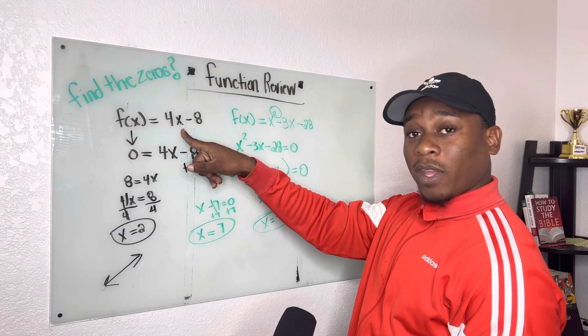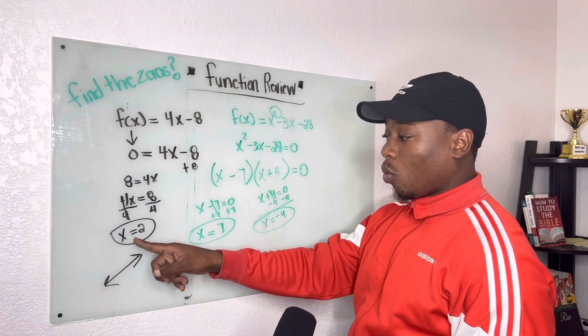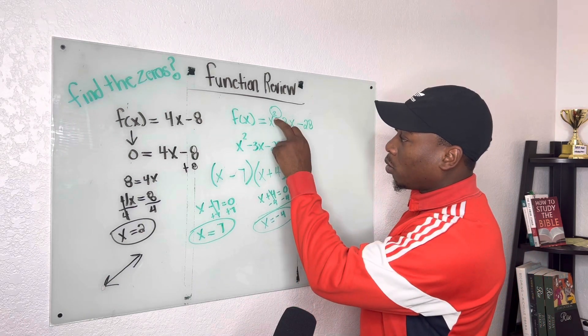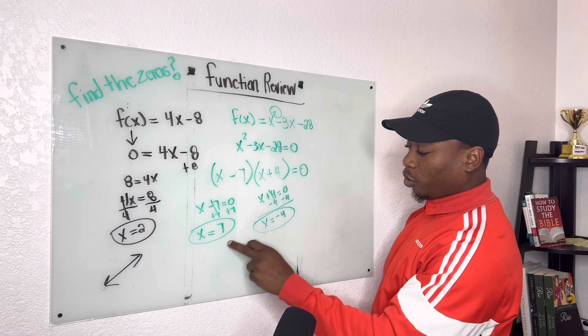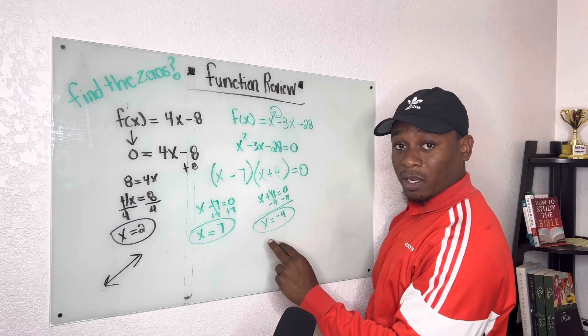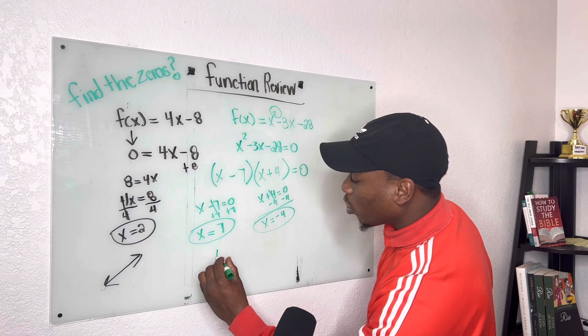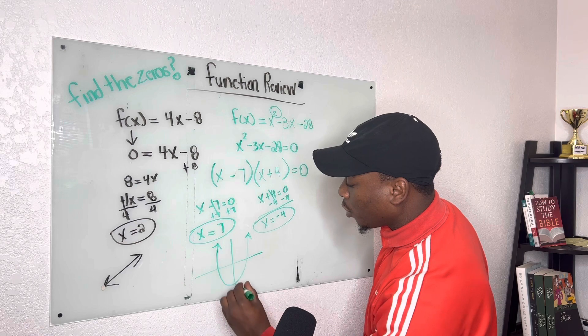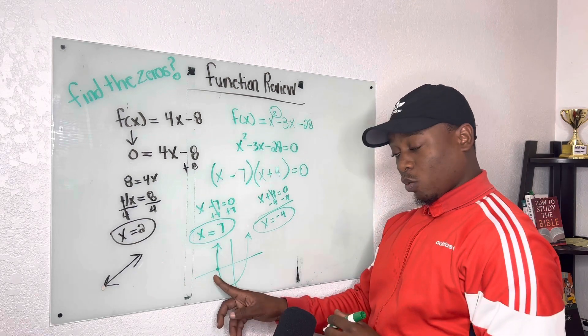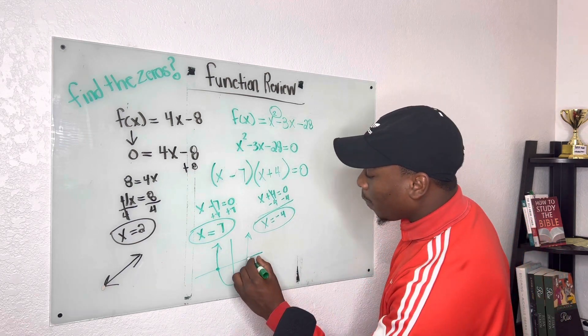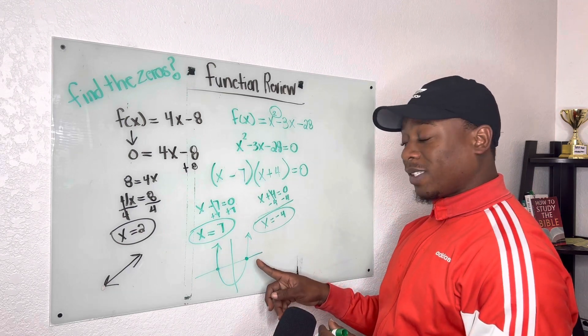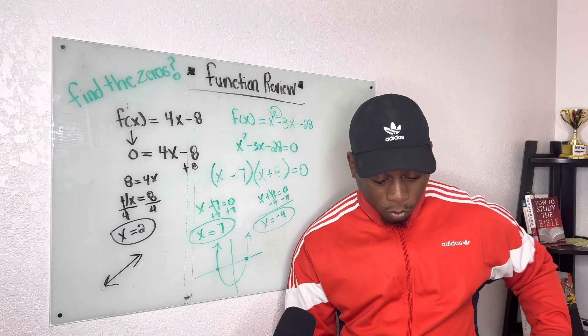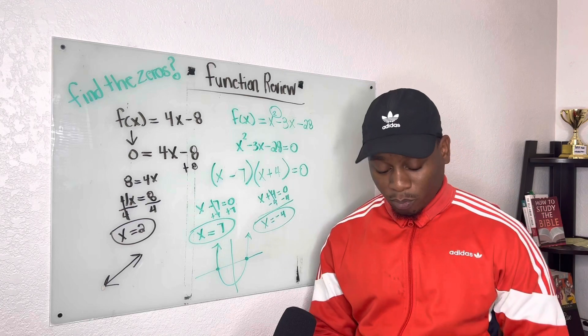So we have the exponent of 1, we have one answer, one x-intercept. Exponent of 2, we have two x-intercepts. Two solutions, two answers. So when we draw a graph for this, we would have an x-intercept. This would probably be negative 4, and then this is going to be our positive 7. So exponent of 2, two intercepts. And before we wrap this video up today, I'm going to go ahead and do one more problem.